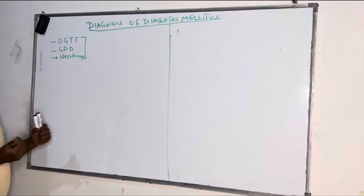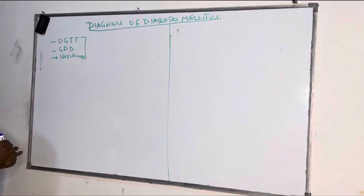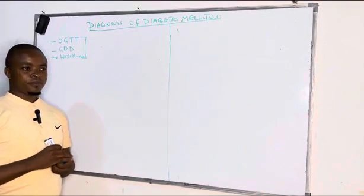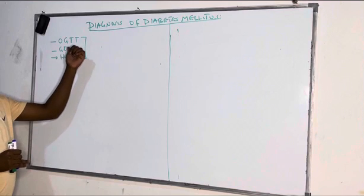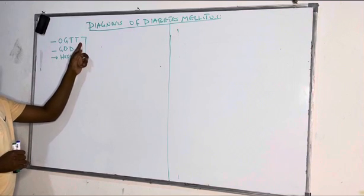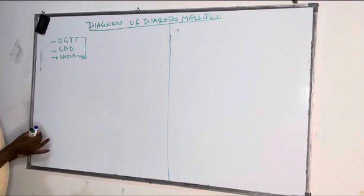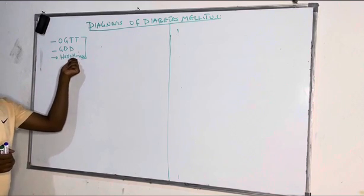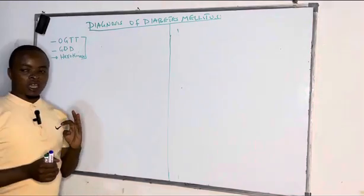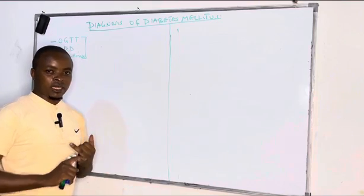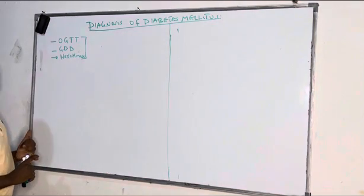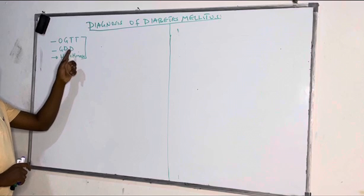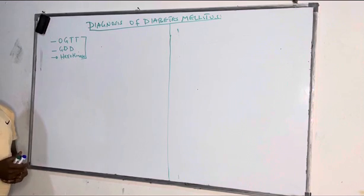In the first video, we looked at HbA1c, and we looked at both fasting and random blood sugar and their reference ranges. So in this one, we want to focus on oral glucose tolerance test, the glucose oxidase method, and hexokinase method. In this video, we are looking at how we determine glucose levels in our blood using these three methods.